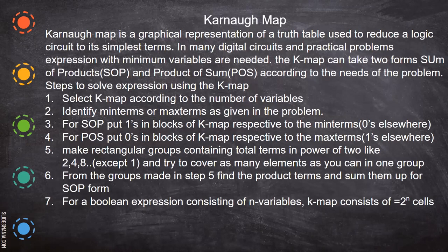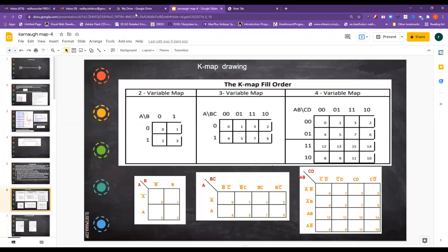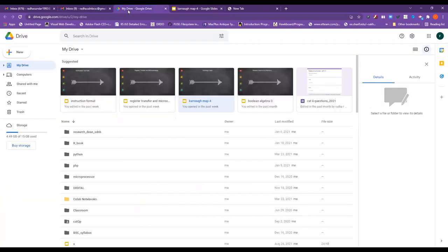What is a Karnaugh map? For two variables, A and B, you can draw the K-map like this — it gives four combinations. For two variables we have two-squared, which is four combinations: 00, 01, 10, and 11.